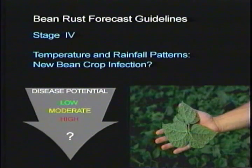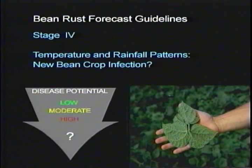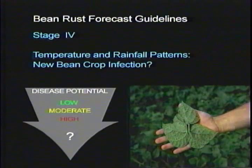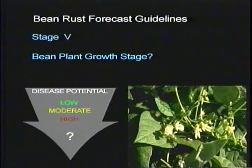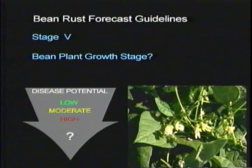The fourth stage considers moisture and temperature conditions that influence infection of new crop beans by spores blown from infected volunteer beans. The fifth stage considers the stage of new crop plant development when initial infection occurs. Infection before or during flowering is more serious than infection after the pod bump stage.